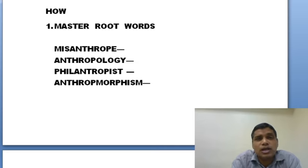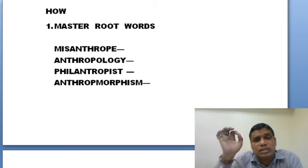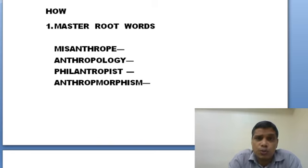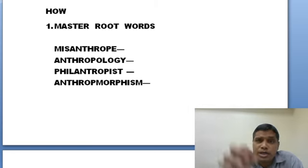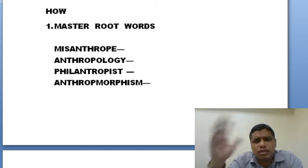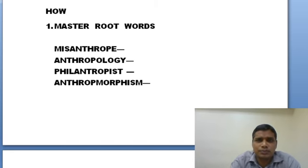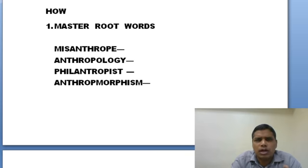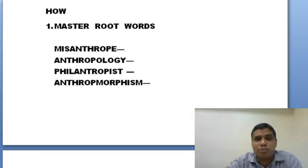If you have properly learned one root word, then what happens — you can guess and predict the meaning of dozens of words. Here is an example: misanthrope, anthropology, philanthropist, anthropomorphism — all of these words are derived from the root ANTHROP. If I don't know the meaning of any of these words but I know that ANTHROP means human being, then I can properly guess that human meaning will be common in any of these words.